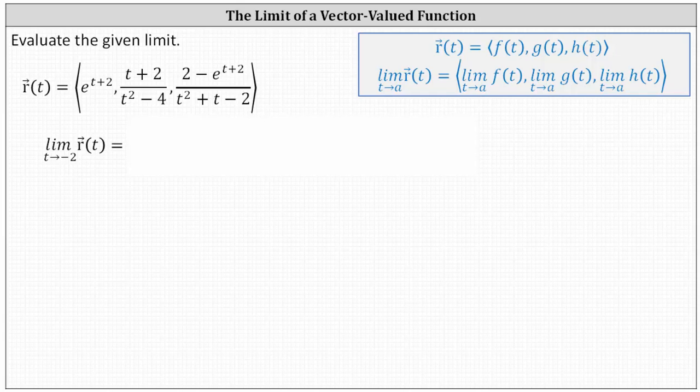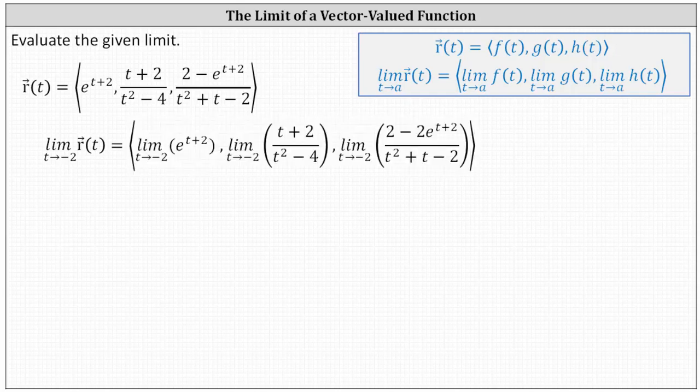To determine the limit as t approaches negative two of the vector-valued function, we determine the limit as t approaches negative two of each of the three components of the vector-valued function r of t. Now we need to consider each of the three limits.